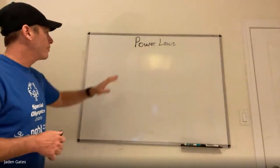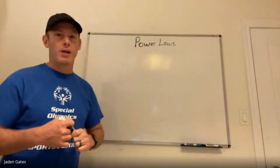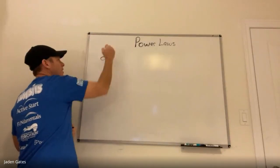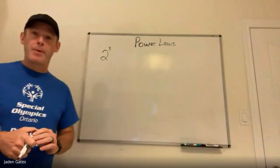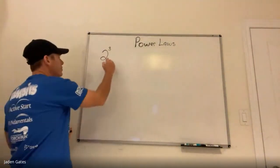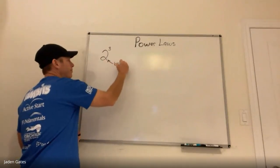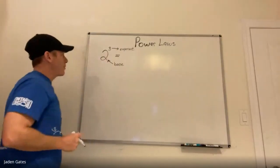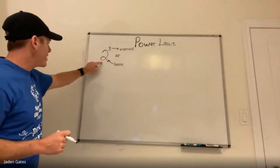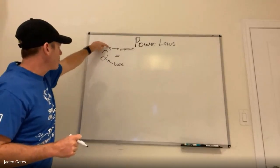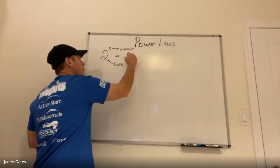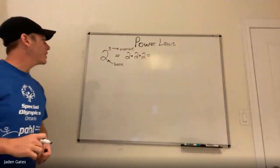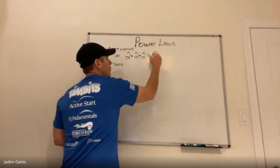This first class should be review from grade nine. A power is something like two to the power of three. They actually have names: the big number is called the base, and the little number is your exponent. What it means is you take the base and multiply it by itself the number of times indicated by the exponent. So two to the power of three is two times two times two, which is eight.